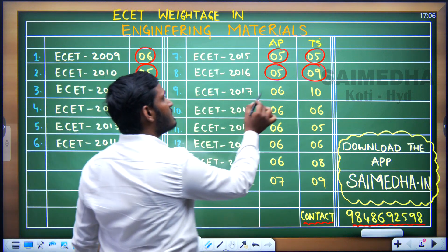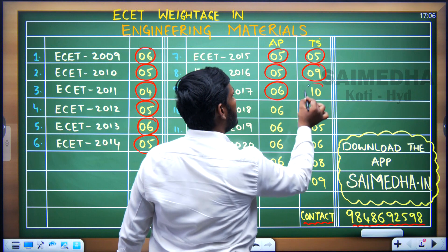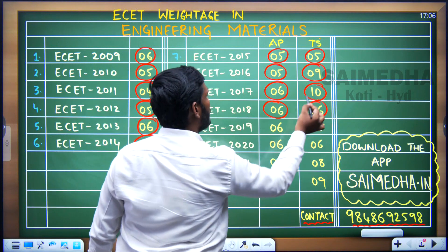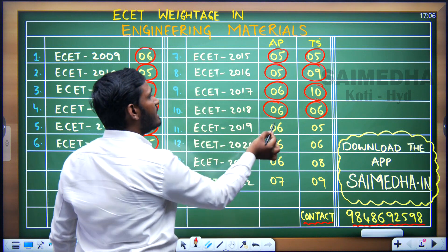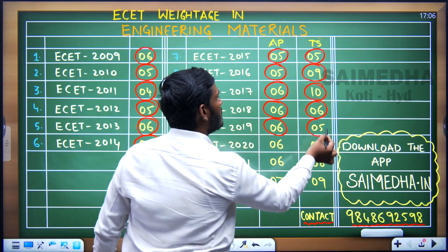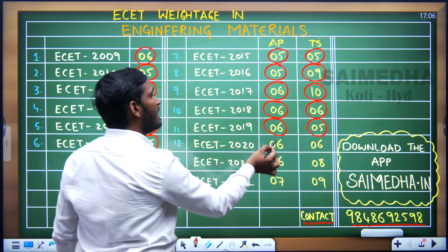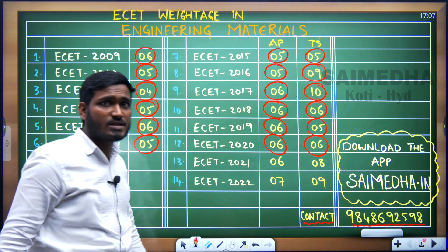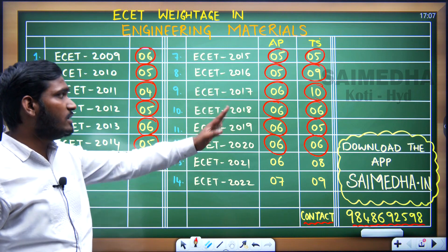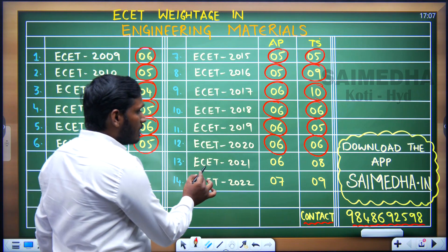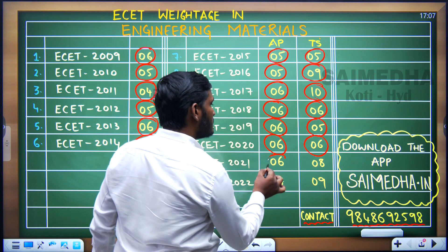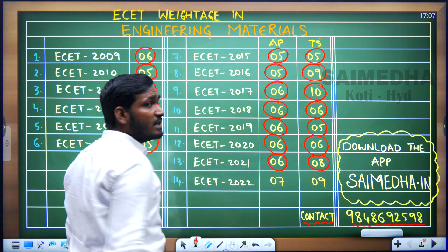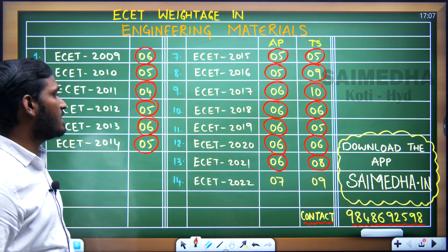Similarly, in 2017 — 6 questions in AP and 10 in TS. In 2018, 6 questions in AP and 6 in TS. In 2019, 6 questions in AP and 5 in TS. In 2020, 6 questions in both AP and TS. In ESET 2021 AP — 6 questions, and TS 2021 — 8 questions were asked.